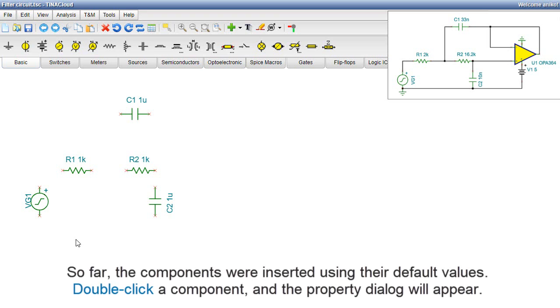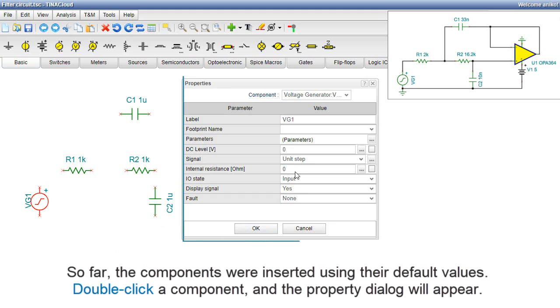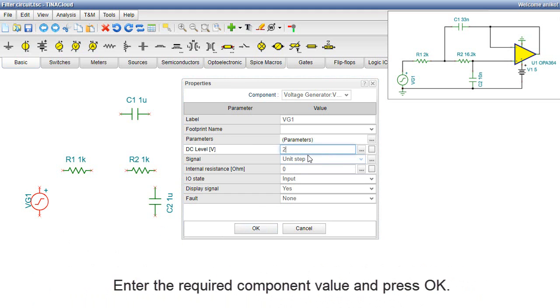So far, the components were inserted using their default values. Double-click a component, and the property dialog will appear. Enter the required component value and press OK.